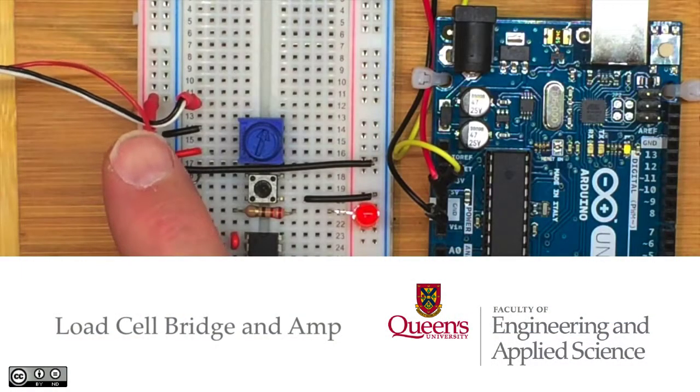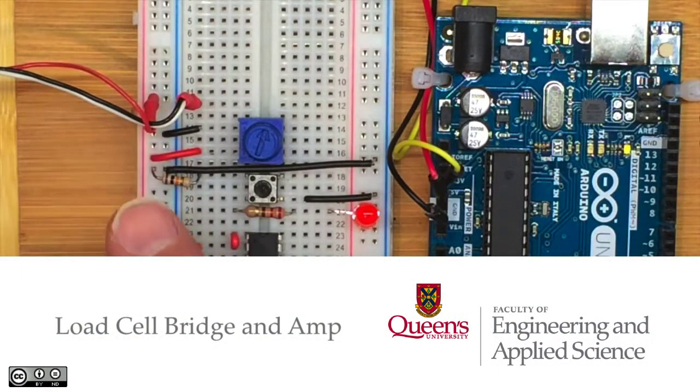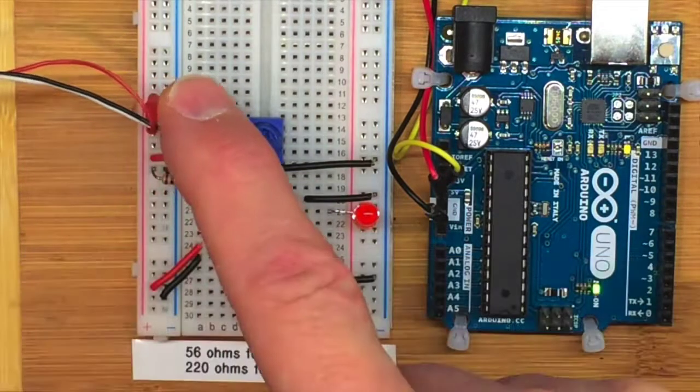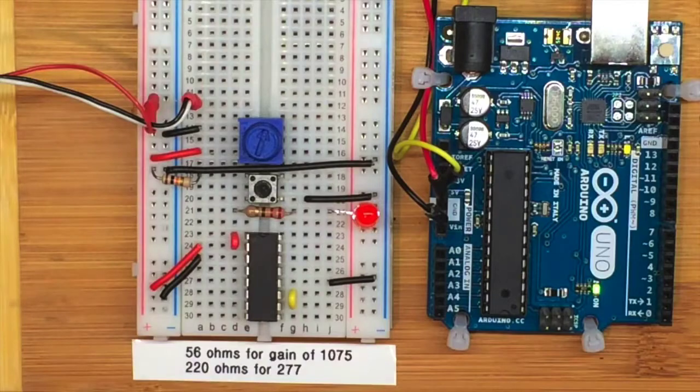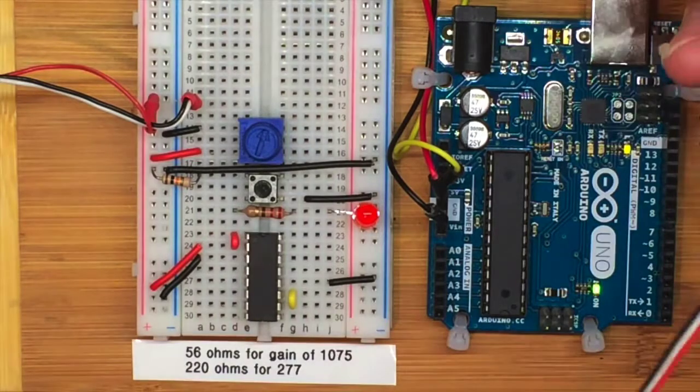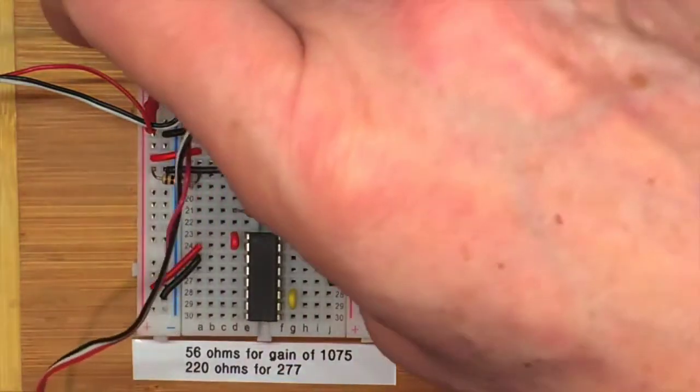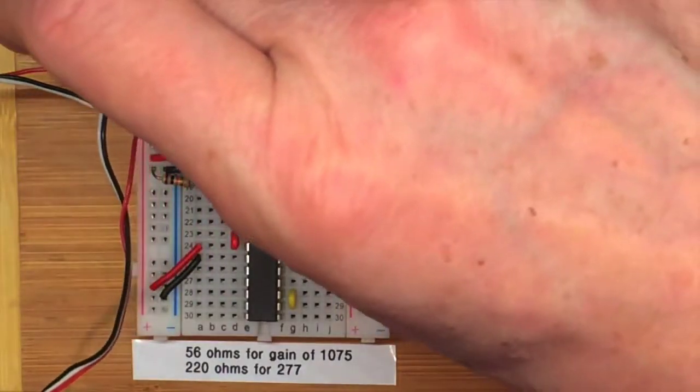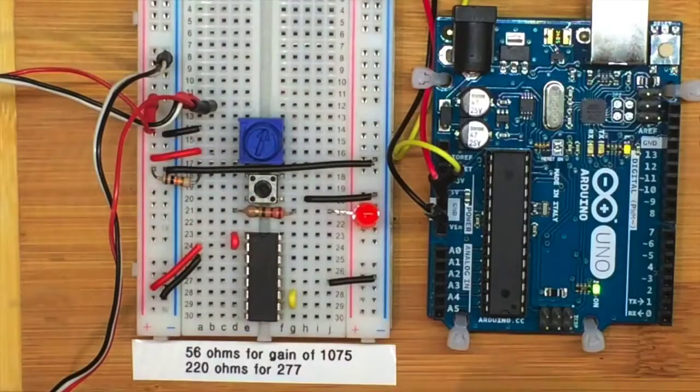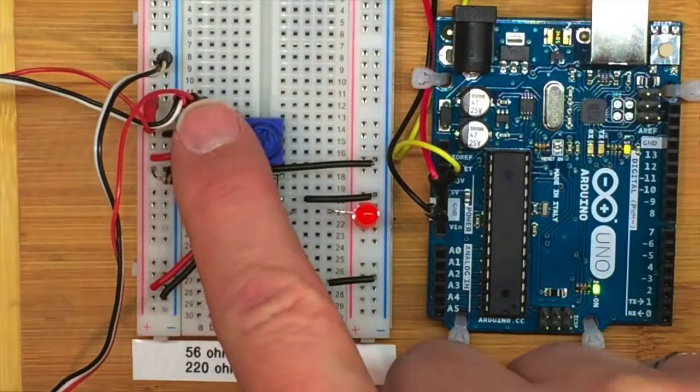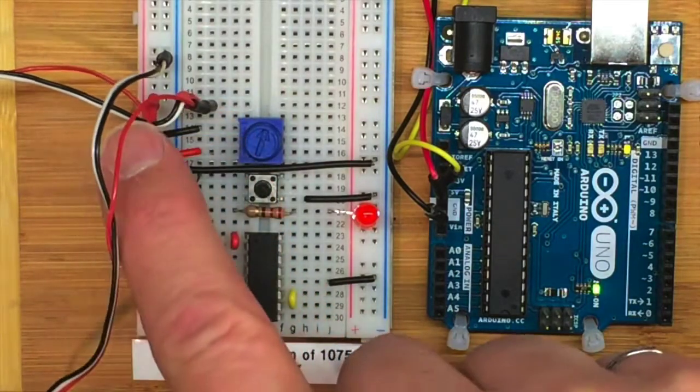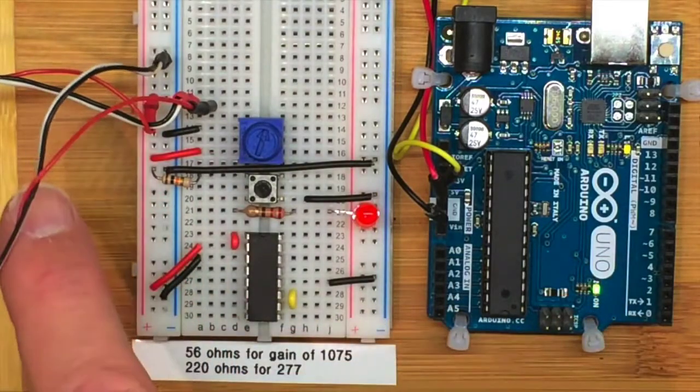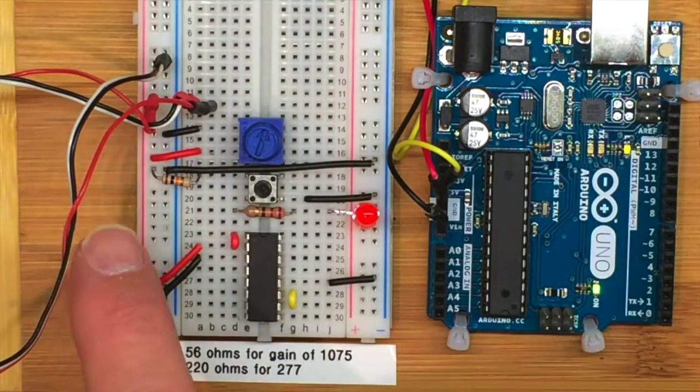This lead comes from one of the gauges on the bottom of the load cell. It's connected to plus 5 and then to a point over here on the breadboard. This lead comes from one of the gauges on the top. I'm going to connect it to that point on the breadboard and back over to ground. As a result, that'll be 2.5 volts because both of these resistances are the same at about 120 ohms, very close to the same.